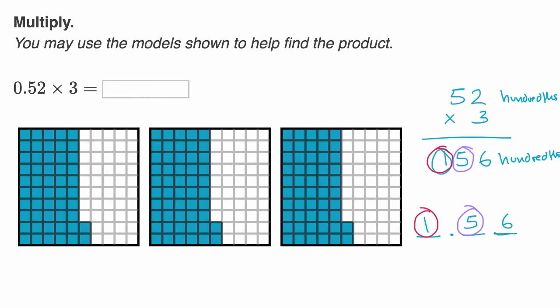So this is going to be equal to, we could say 1.56, or you could view this as one hundred fifty-six hundredths. So you could view this as a whole, which is a hundred hundredths, and five tenths, which is fifty hundredths, and six hundredths.